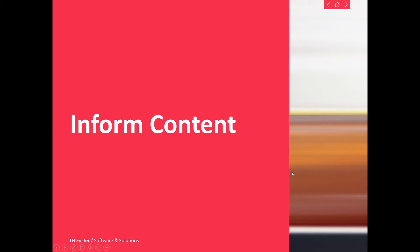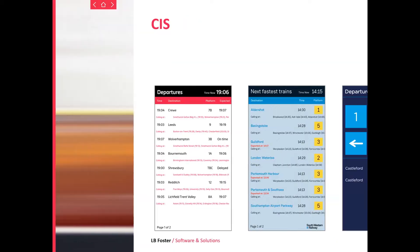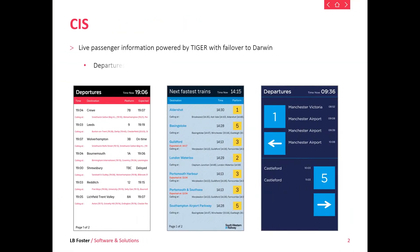Hi, I'm Rhys from LB Foster and I'm going to show you a bit about our informed content. First up we've got CIS — this is our live passenger information powered by Tygo with failover to Darwin.